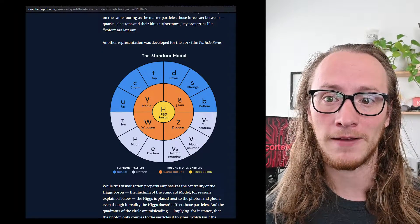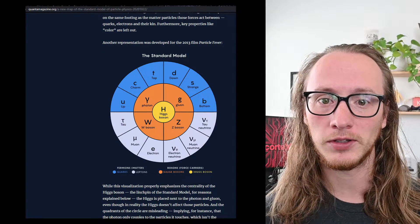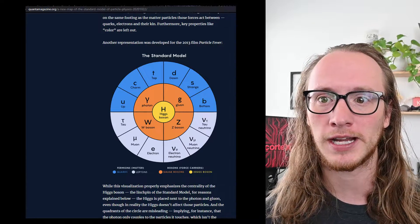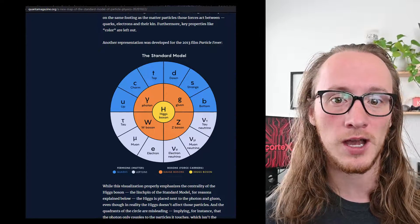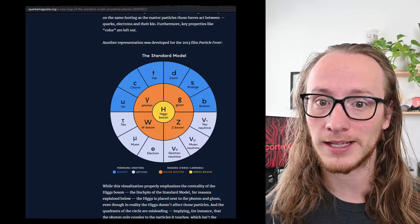This chart is by far the worst. When you look at this one, you would think that photons have some special connection to up quarks, charm quarks, and top quarks, which is simply not the case at all.